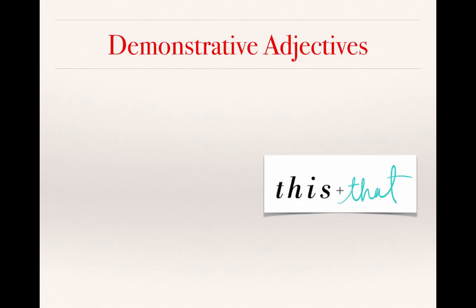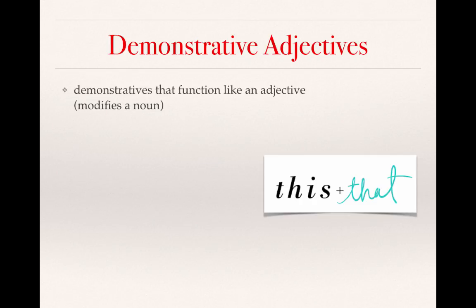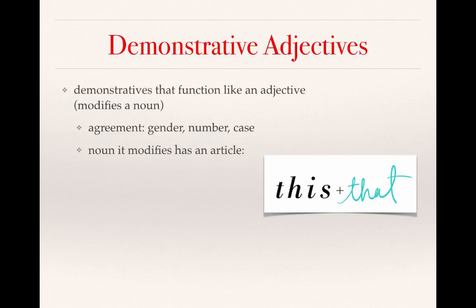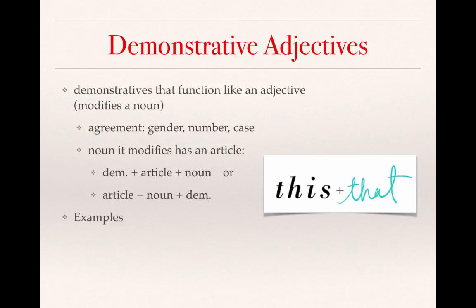Demonstratives can function like adjectives. In this case, they're known as demonstrative adjectives, and they are used to modify a noun. They will agree in gender, number, and case with the noun that they modify. The noun modified by a demonstrative will have an article in one of two places: the demonstrative followed by the article and noun, or the article, then the noun, then the demonstrative. It will not be in between the noun and the article.